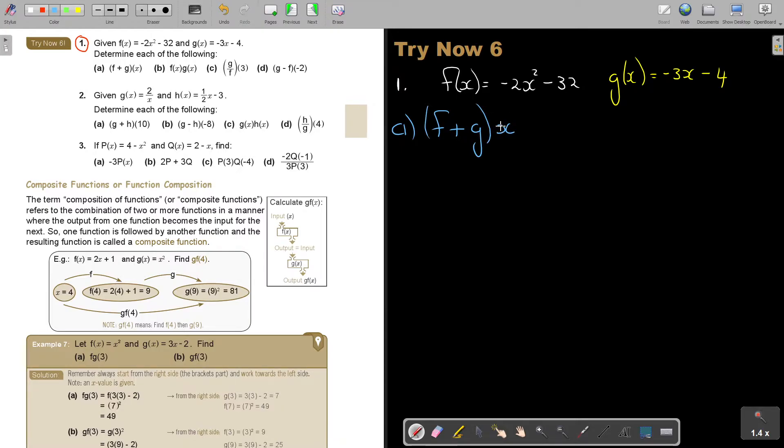If they give it to you like this, then basically it's just saying you must add the two functions. So you must take f and I add g. Remember there's not a number, so it's in terms of x. If I simplify this, it's minus 2x squared, and this is minus 3x, and then minus 32 minus 4, it's minus 36. And that's your final answer.